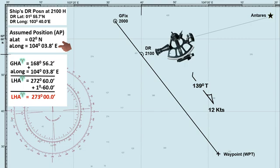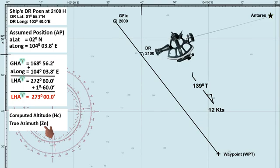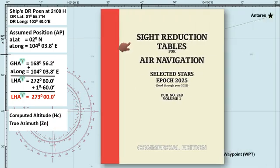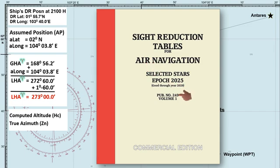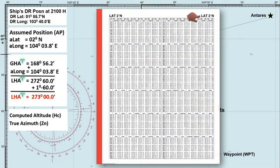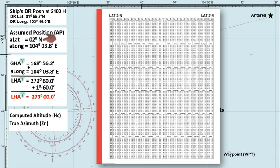Now what is the purpose of assumed position? It is commonly used when we determine the computed altitude and the true azimuth, or true bearing of celestial bodies, using a sight reduction table. This is frequently referred to as Table 249, where volume 1 is used for selected stars. For other celestial bodies, it is available on the other volumes. Each page of this table is marked with a specific latitude at the top. This latitude represents our assumed latitude, and I've selected this page because our assumed latitude is 2 degrees north.